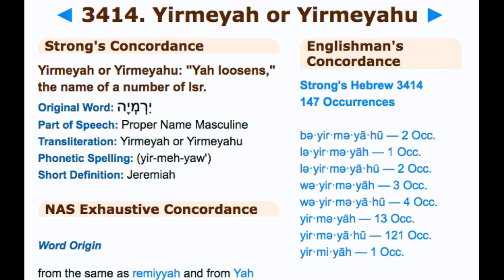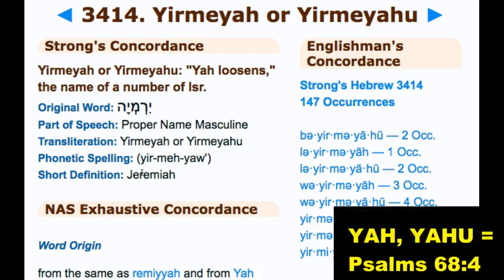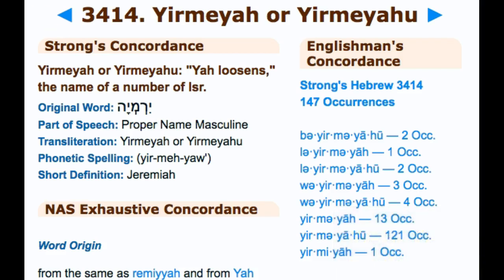As noted in previous videos, most of the names of the prophets of old have Yah or Yahu in them, even in English — Jeremiah, Obadiah. The word hallelujah means 'praise be to Yah,' as even seen in Psalm 68:4. The song 'Kumbaya' means 'come by here, Yah.' Names are very important.